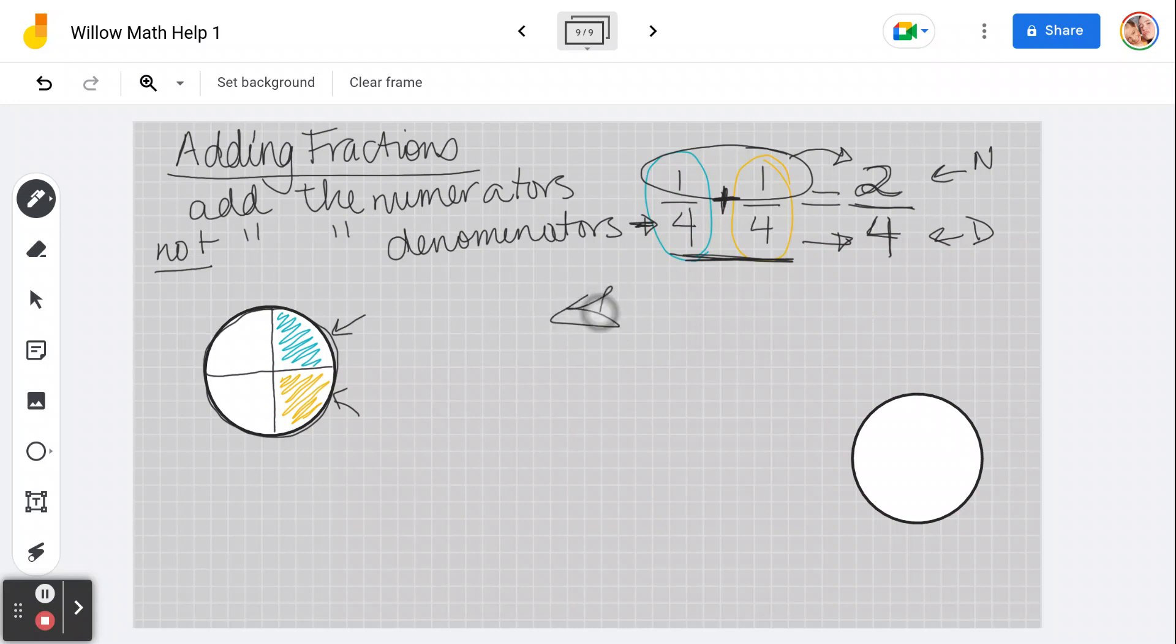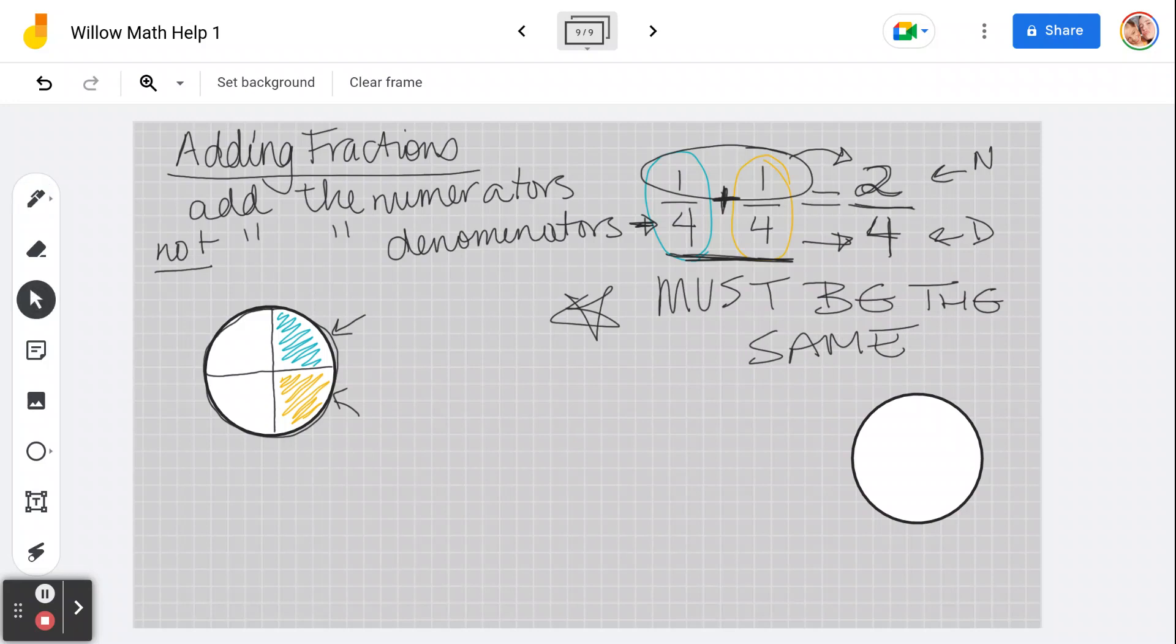Here's the big, crazy, important thing, though. The denominators must be the same. Let me show you why. This is why. This is where my other circle comes into play. I'm going to move this over here.